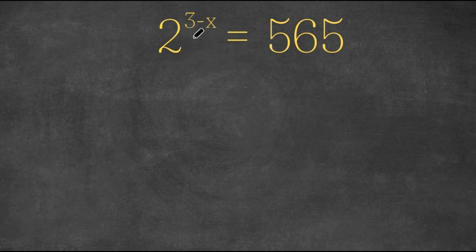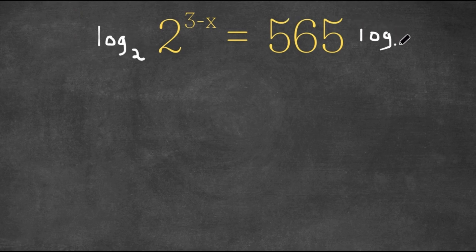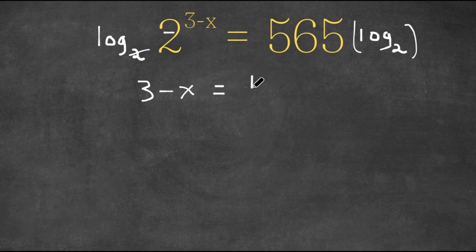What I want to do is get rid of this base and keep the exponent. To cancel out an exponent, we need to take the inverse of the exponent, and the inverse of an exponent is a log. So if I take the log of base 2 on both sides, these two cancel out because the log is the inverse of the exponent. So on the left-hand side I would simply have 3 minus x, and on the right-hand side I would have log base 2 of 565.